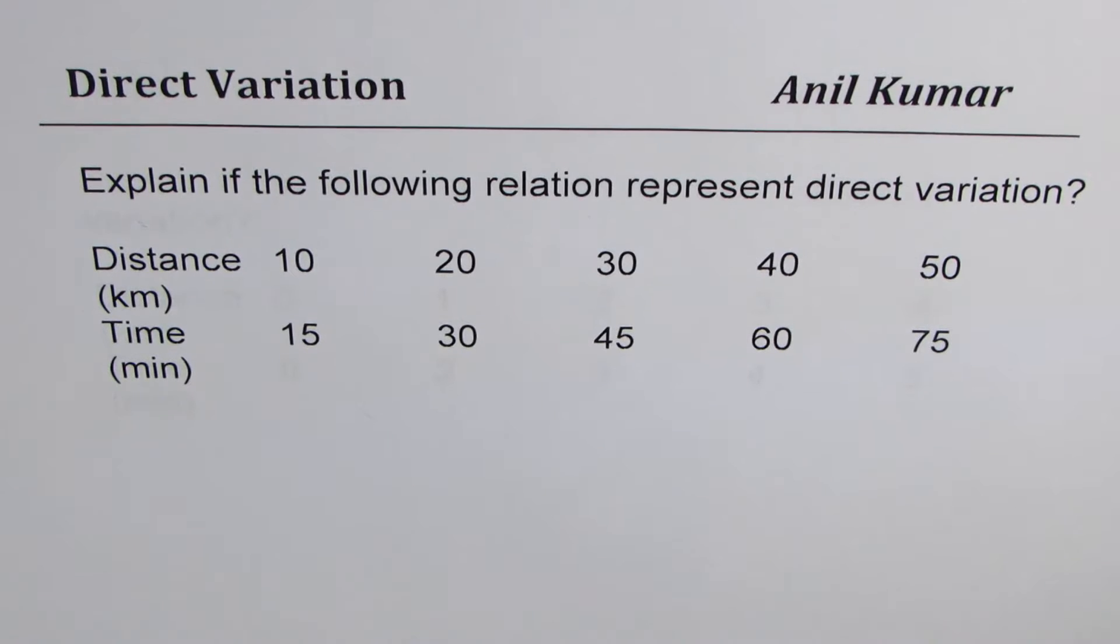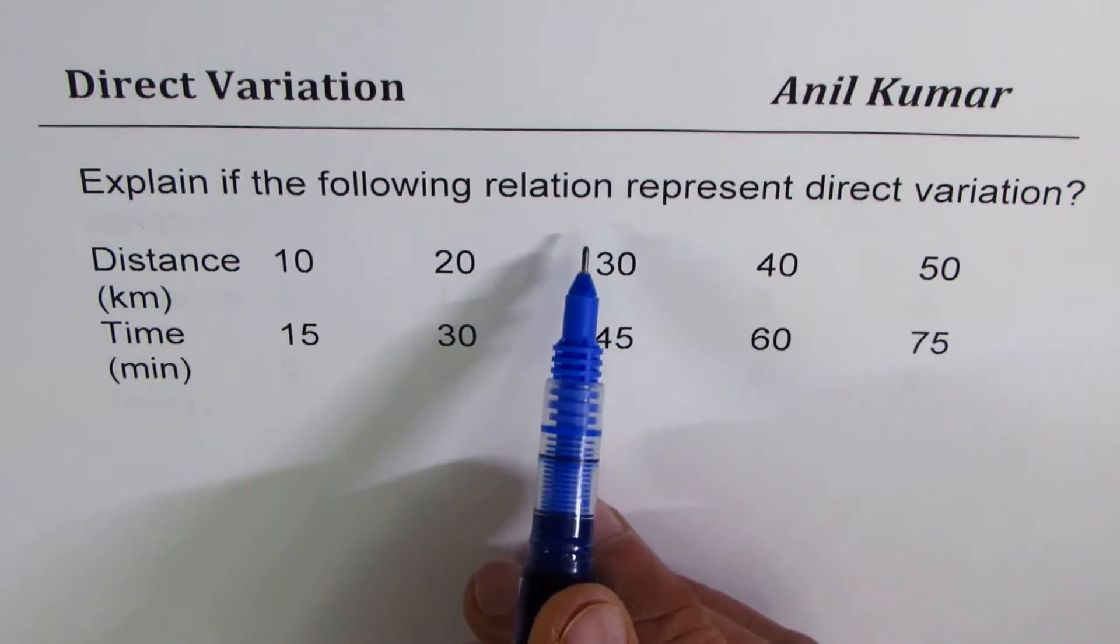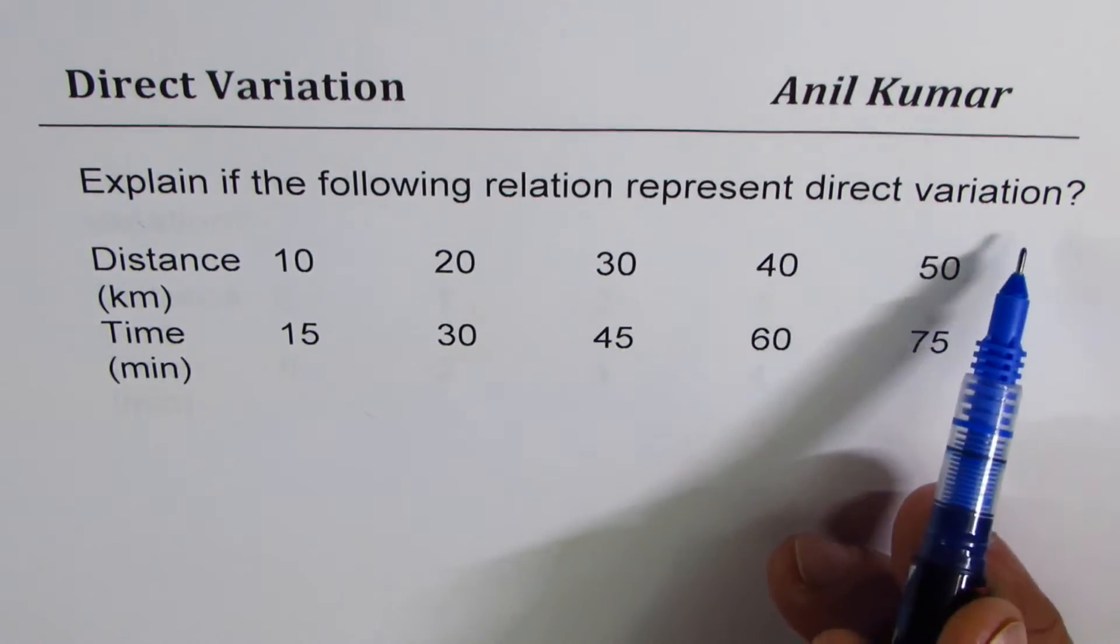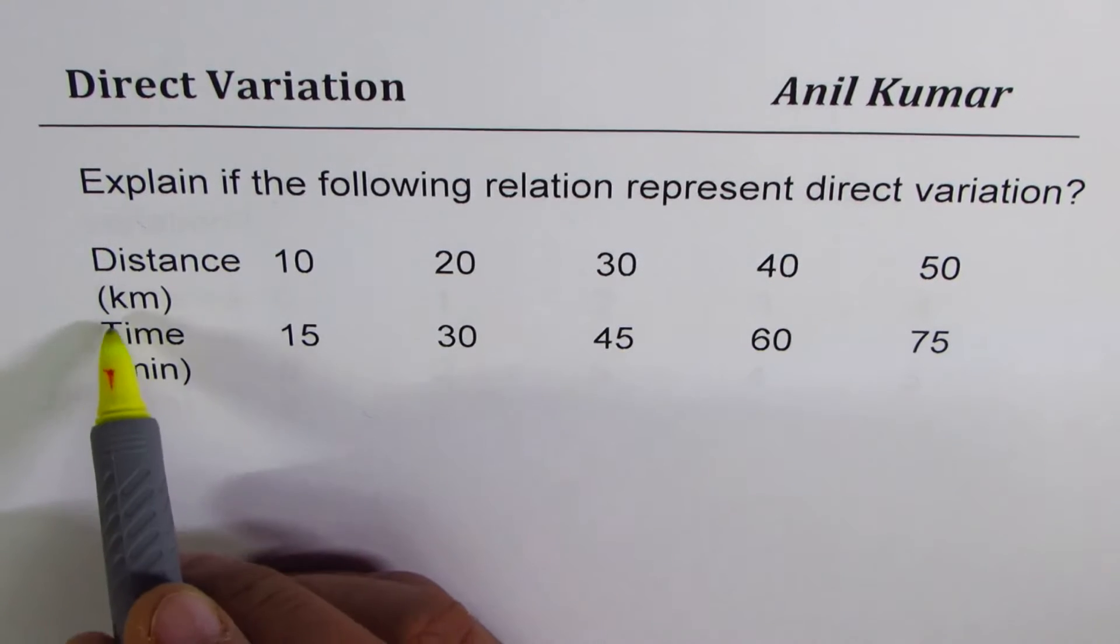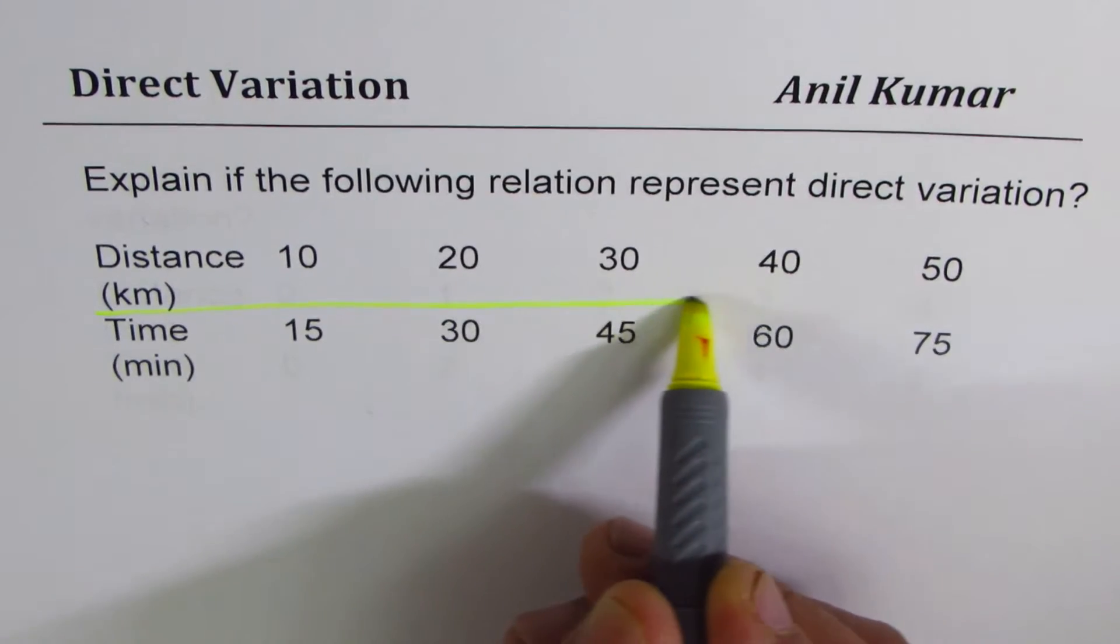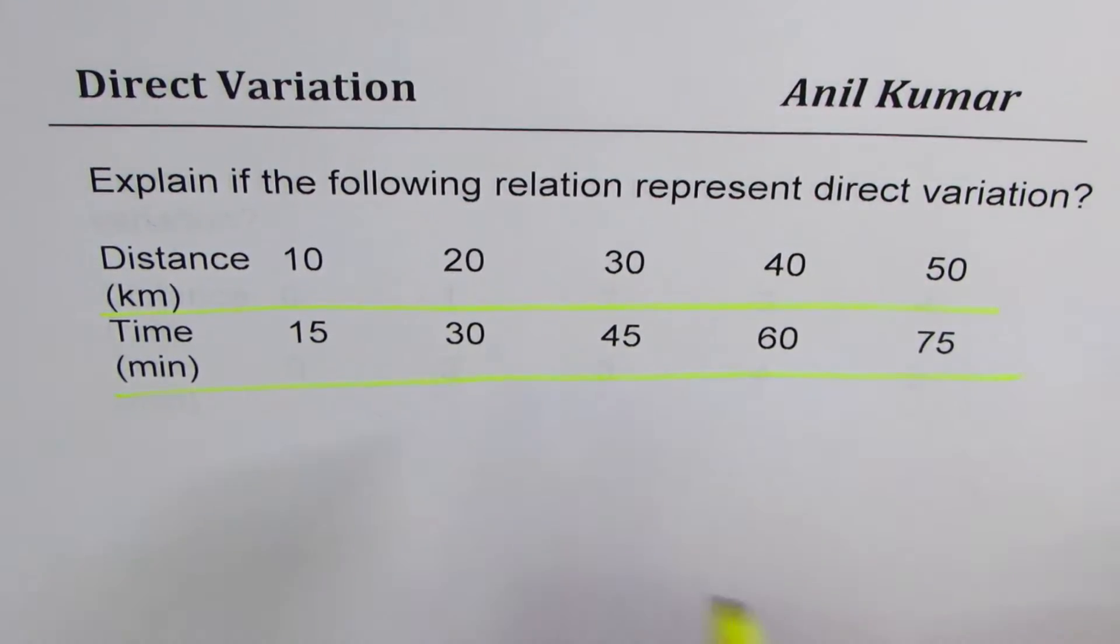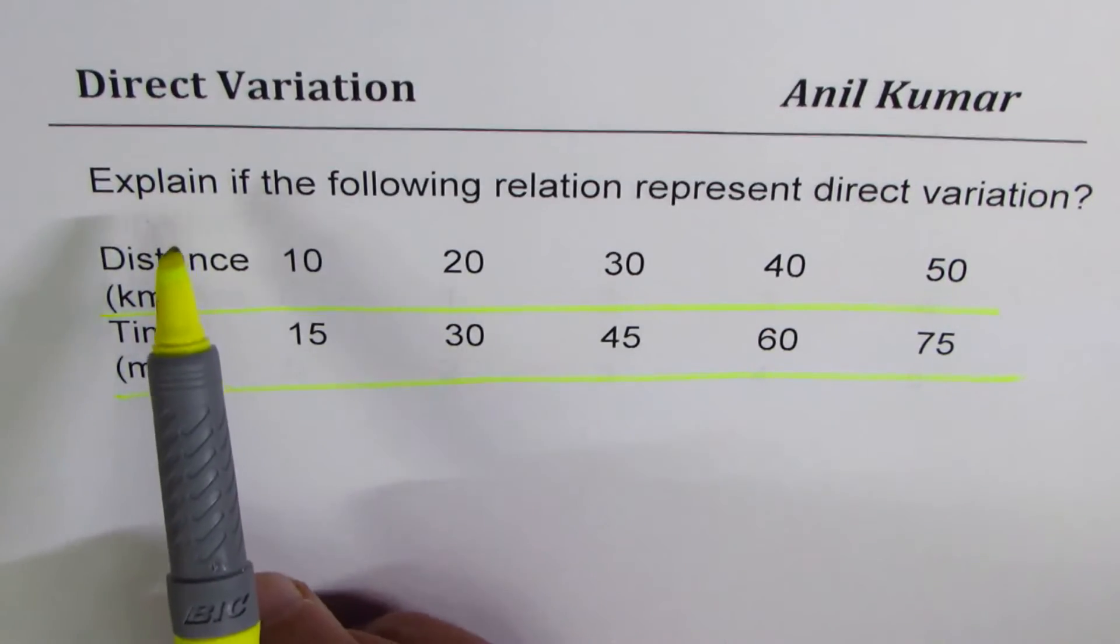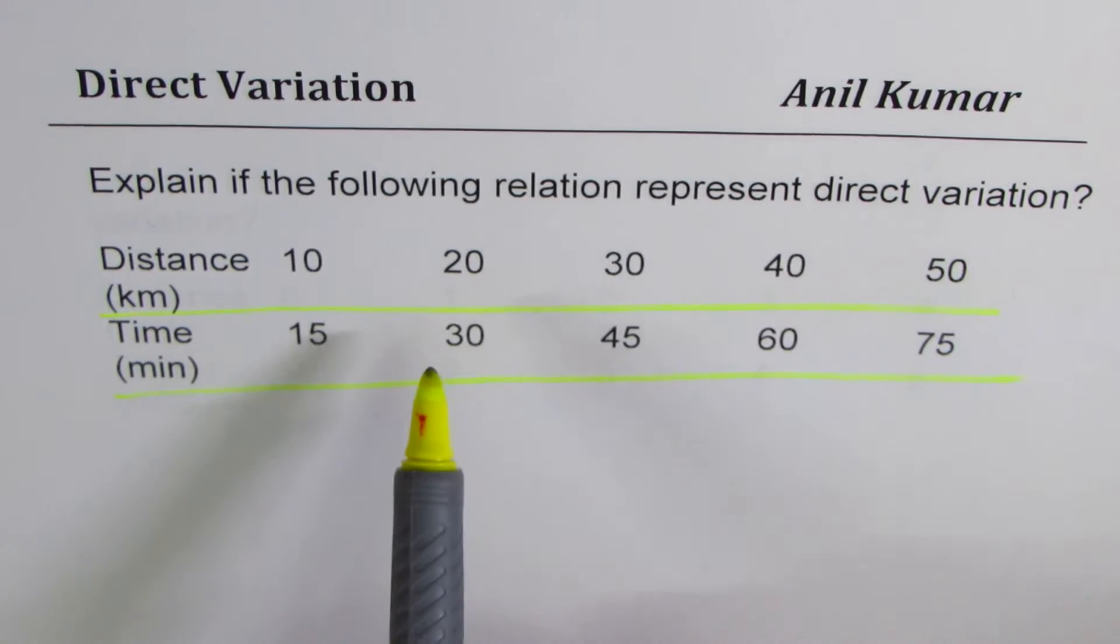Here we are given some data in the form of a table. Explain if the following relation represents direct variation. We are given distance with time. Distance is in kilometers, and time is in minutes. The question is, explain if the following relation represents direct variation.